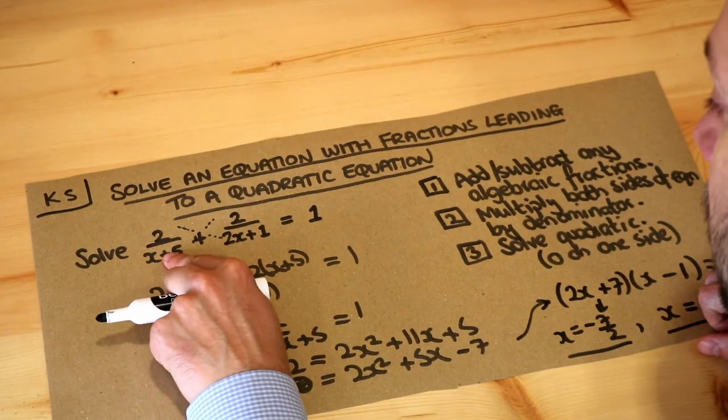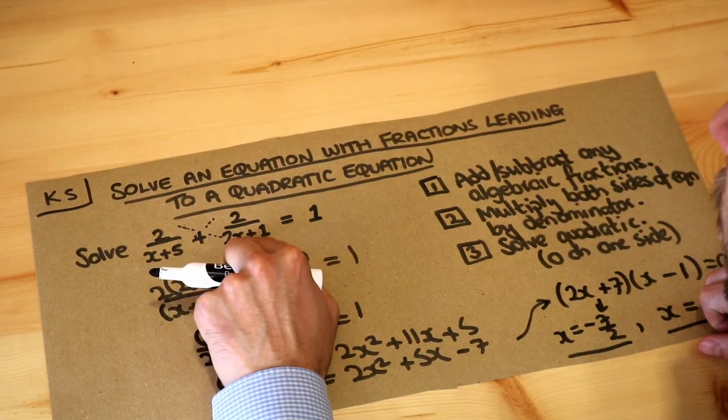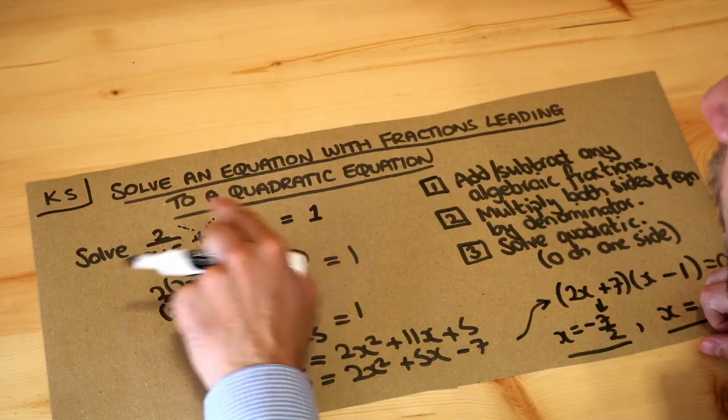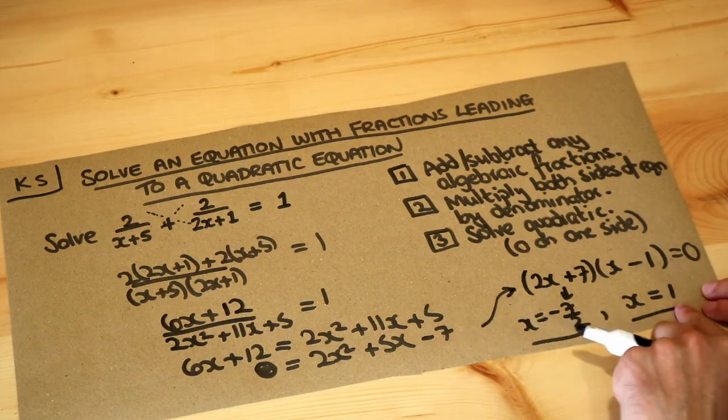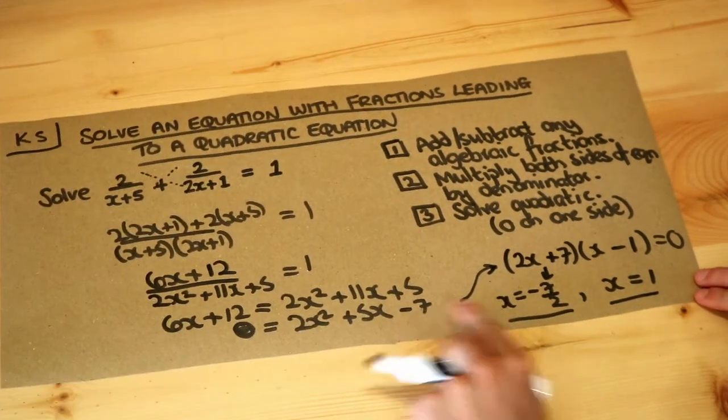A third plus two-thirds is indeed 1, so 1 will be a solution to this equation because 1 satisfies this equation.